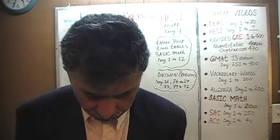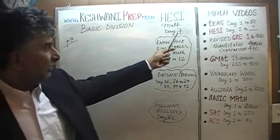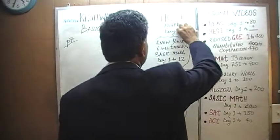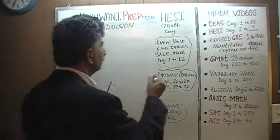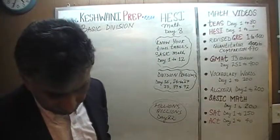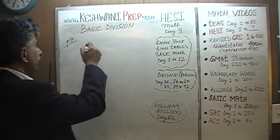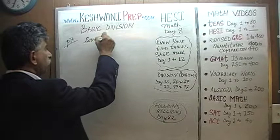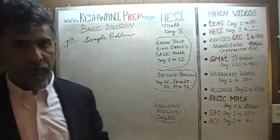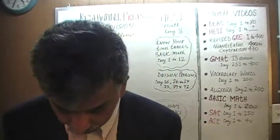Right now we are in the process of solving some problems dealing with the notion of basic division. Today is our lesson number 8, not 7. We are going to do some sample problems that you see at the very bottom of page number 7. Please turn to page number 7. At the very bottom you will see what they term as sample problems — there are 5 of them. That's what we are going to do right now. Let's get going.